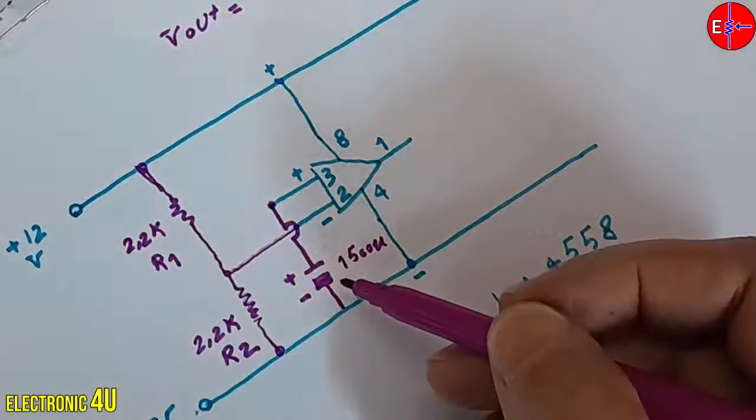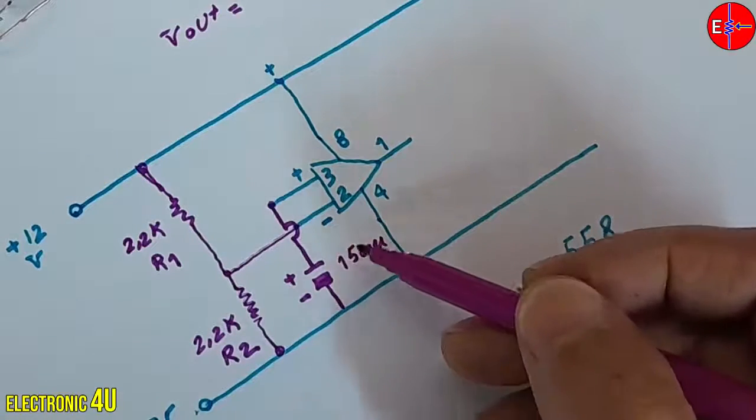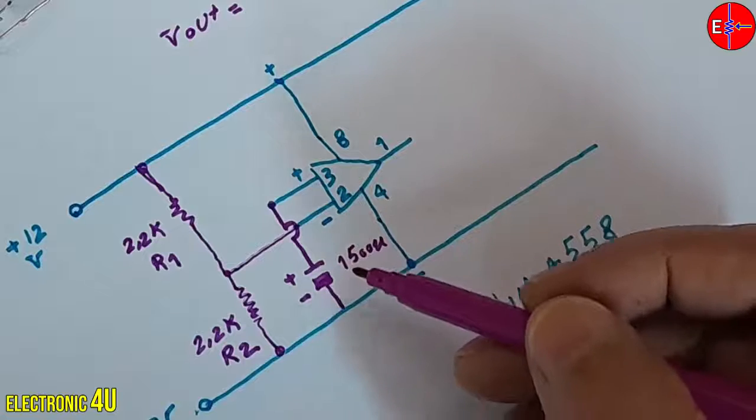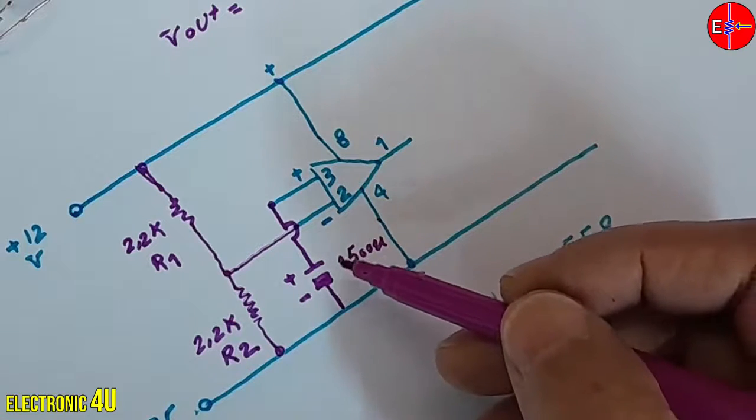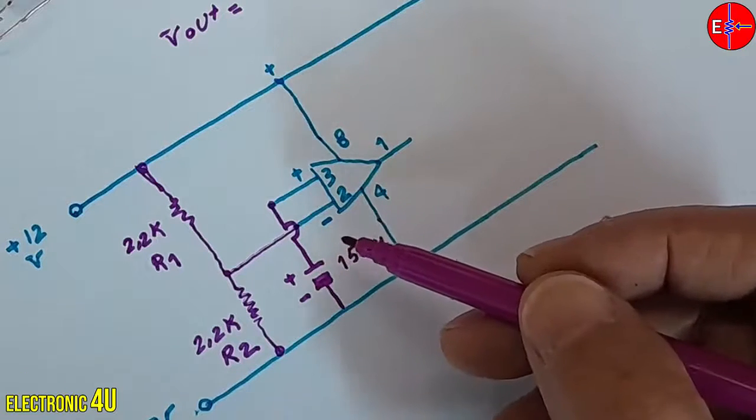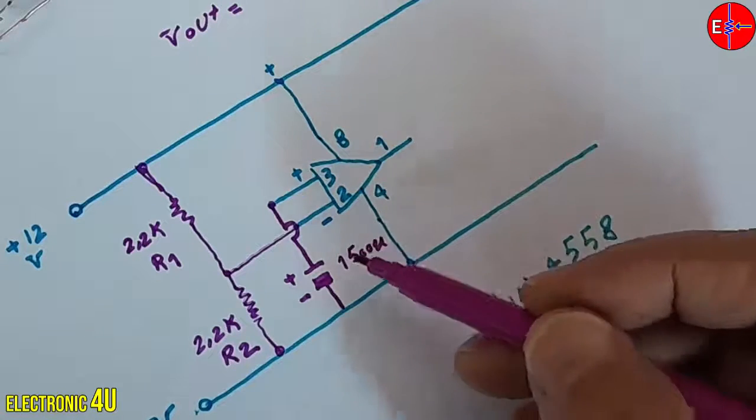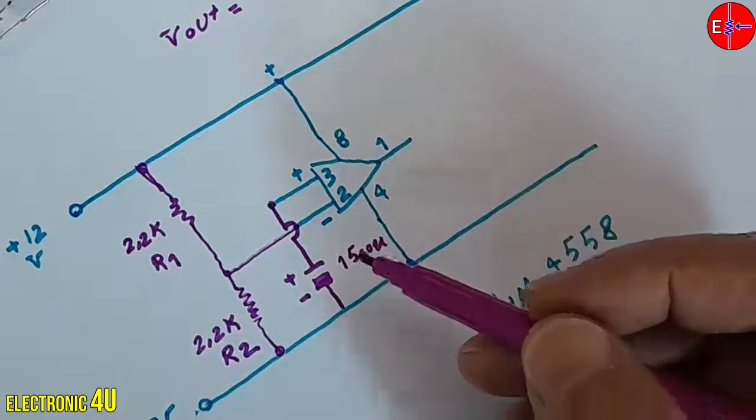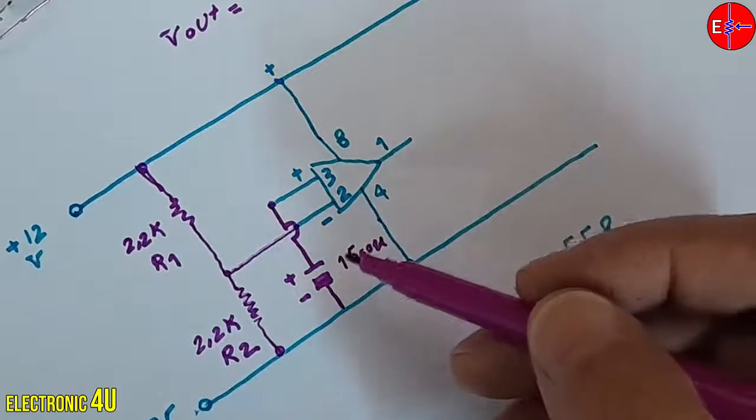To determine the charging speed of the capacitor, we need a resistor. To specify the charging time of the capacitor, we use a potentiometer as a variable resistor. By rotating the potentiometer, we can determine the resistance level. Initially, place a constant resistor,